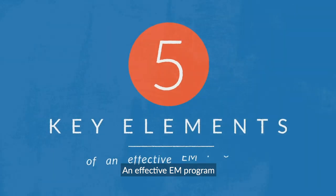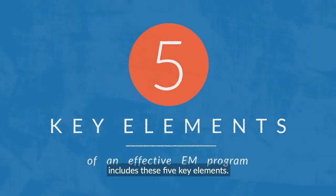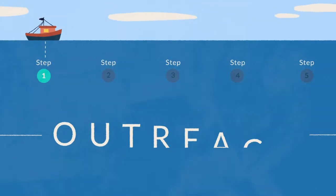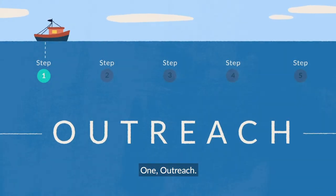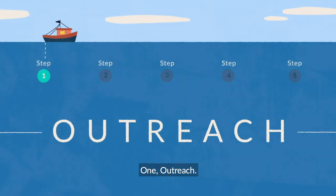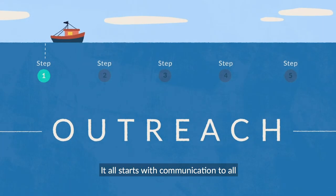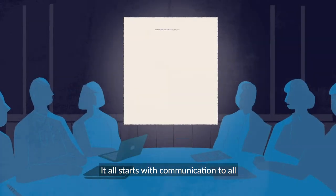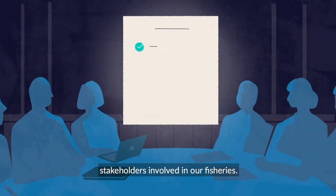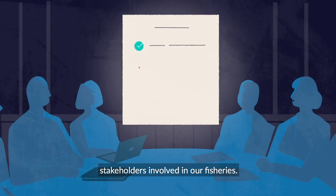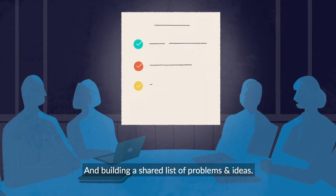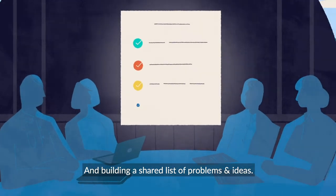An effective EM program includes these five key elements. One: outreach. It all starts with communication to all stakeholders involved in our fisheries and building a shared list of problems and ideas.